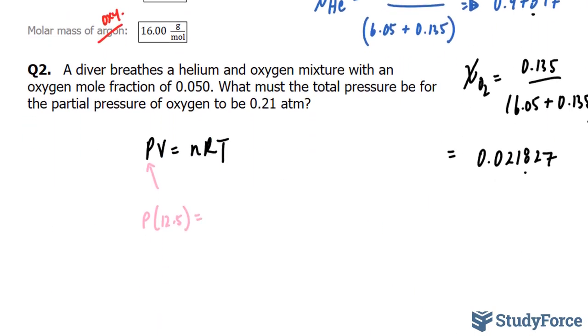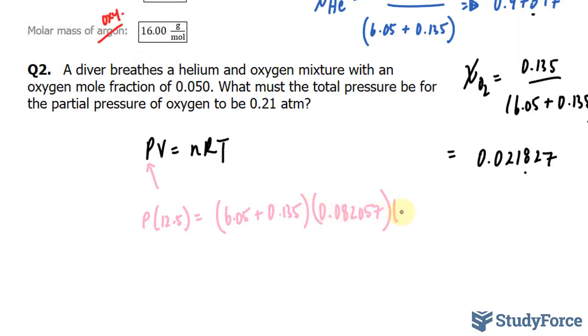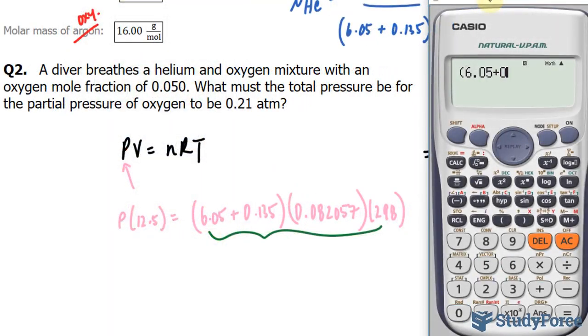The next thing that I'll do is find the total pressure by using the ideal gas law. So I'll use this formula, PV equals nRT. I'll write it down here. PV equals nRT. Remember, I need to find out what P is equal to. I know what the volume is. They gave it to us in the question. It was 12.5. Let's record that. So we have P times 12.5 is equal to. And also, I found the number of moles. I can add these two numbers up and that will give me the number of moles.